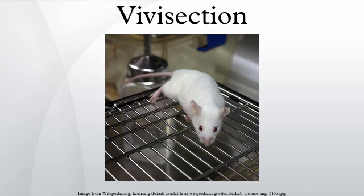Vivisection is surgery conducted for experimental purposes on a living organism, typically animals with a central nervous system, to view living internal structure. More broadly, vivisection is any experimentation on live animals. The term is often used by organizations opposed to animal experimentation but is rarely used by practicing scientists.